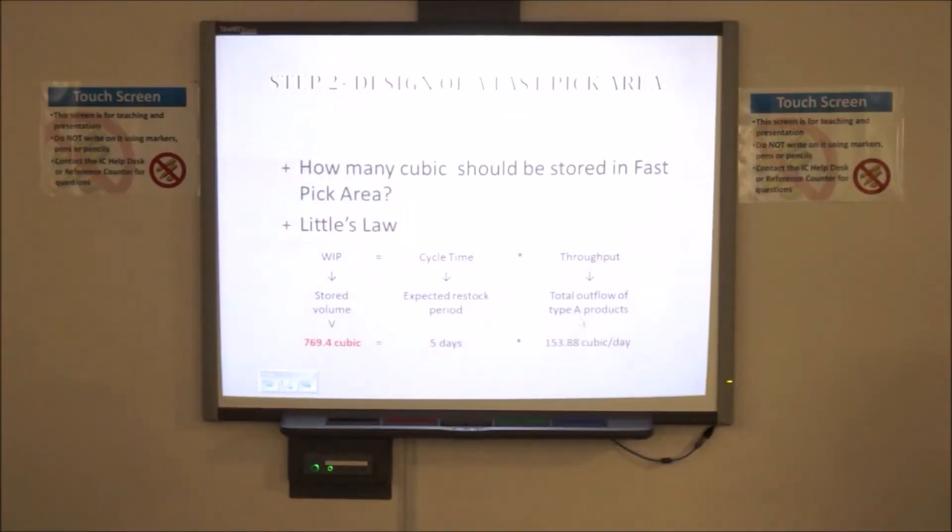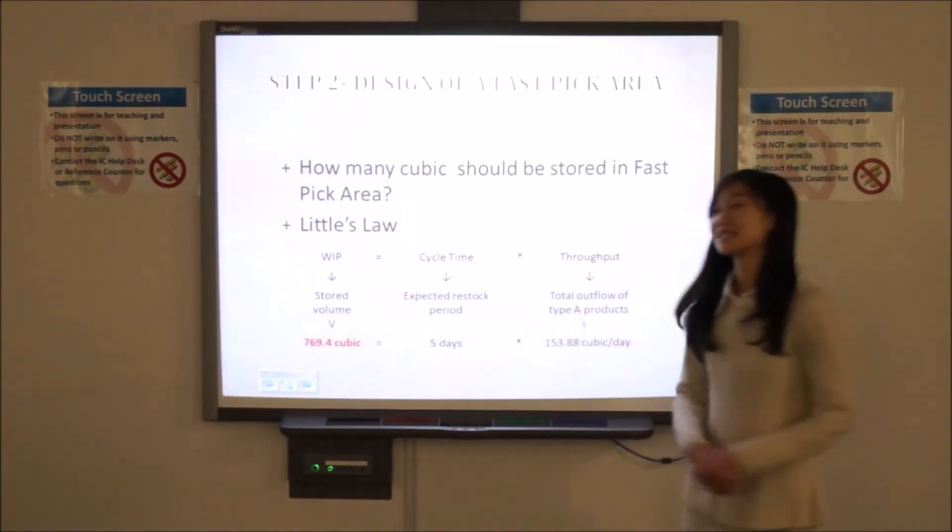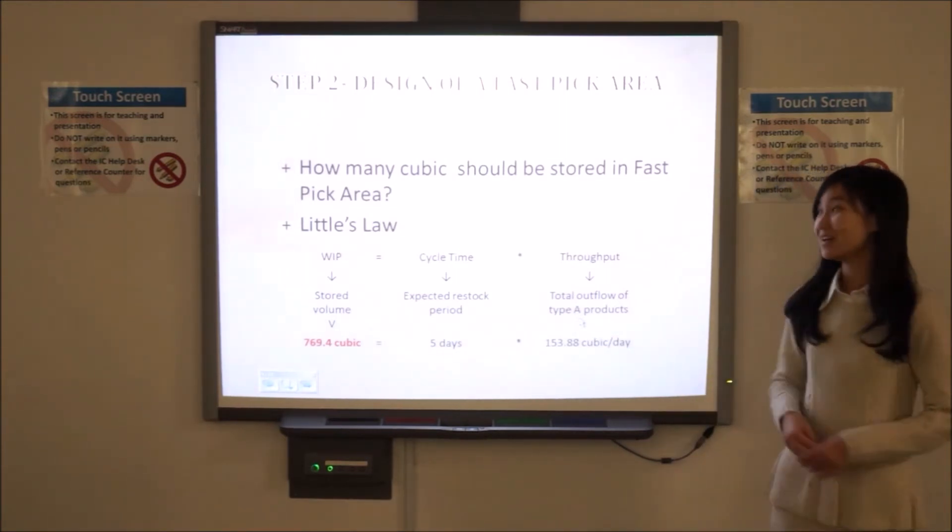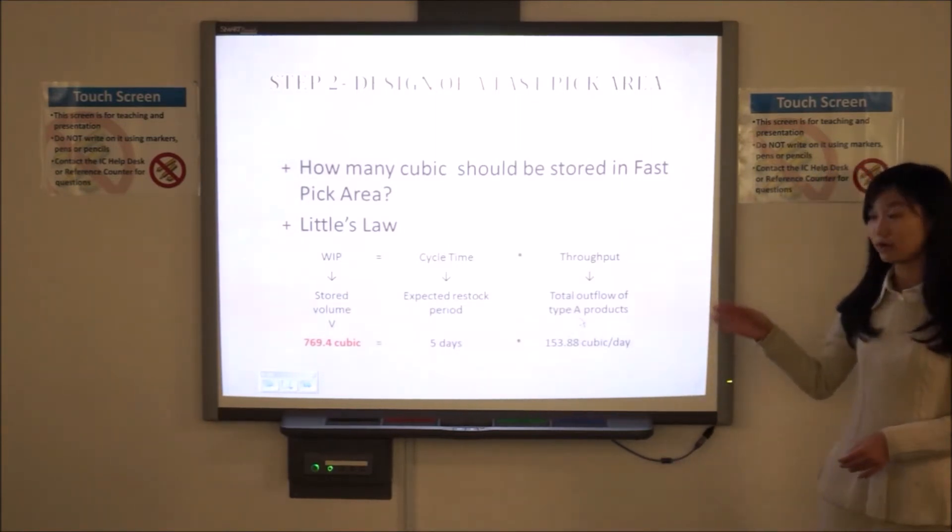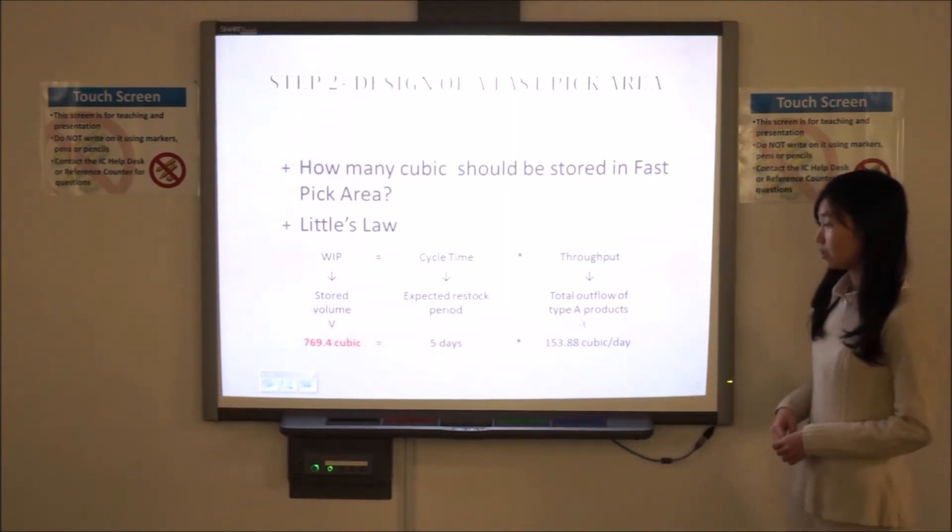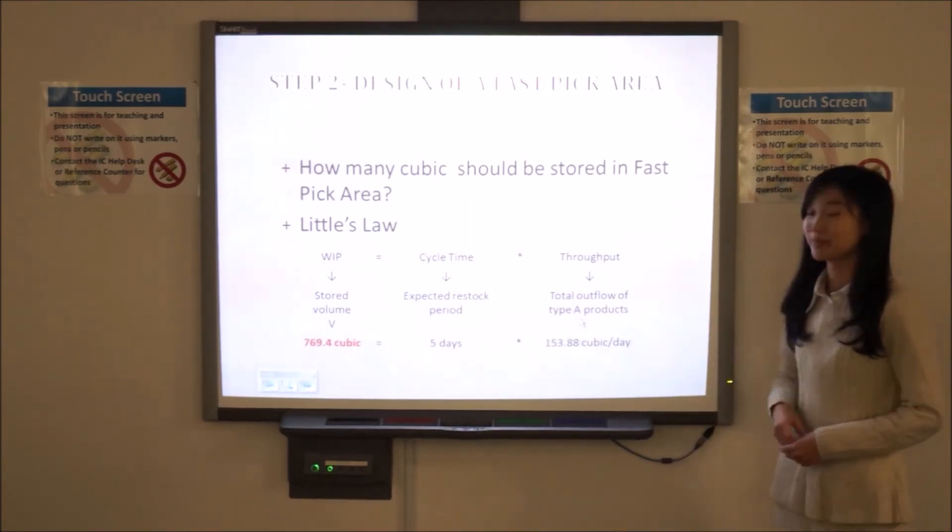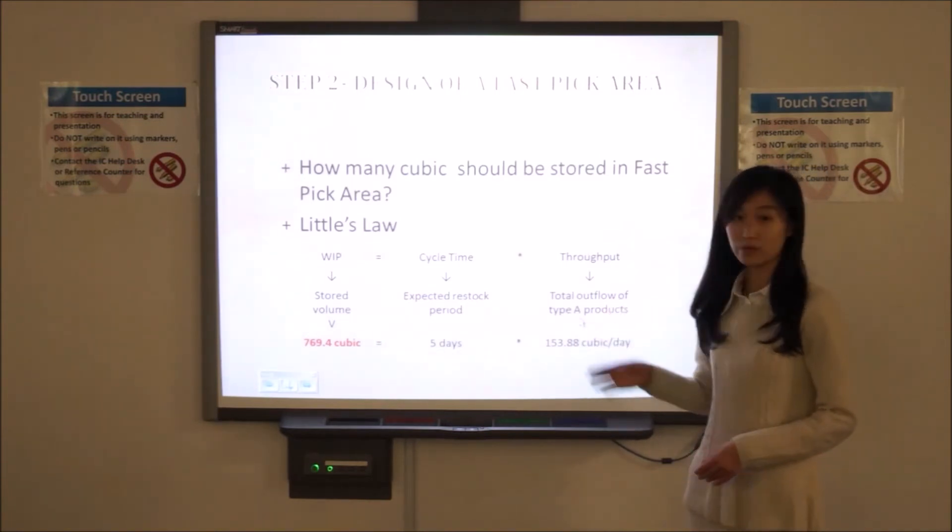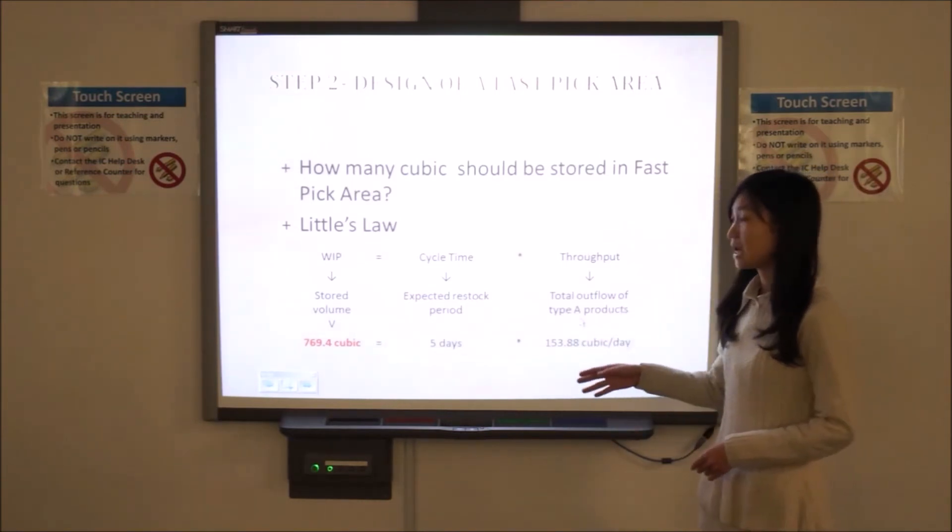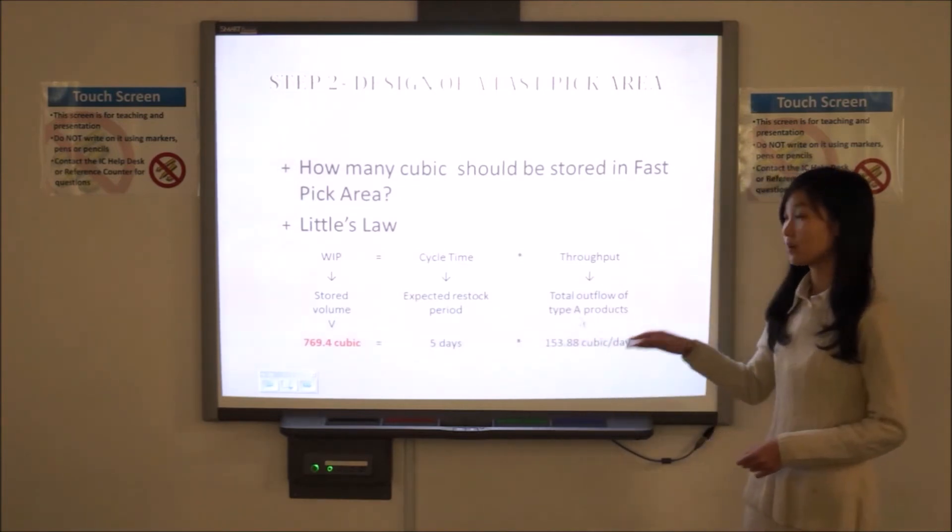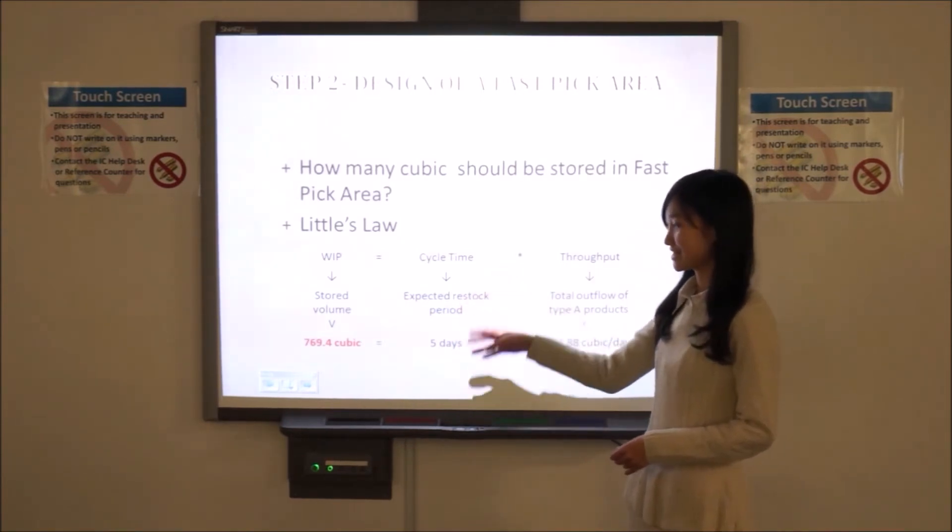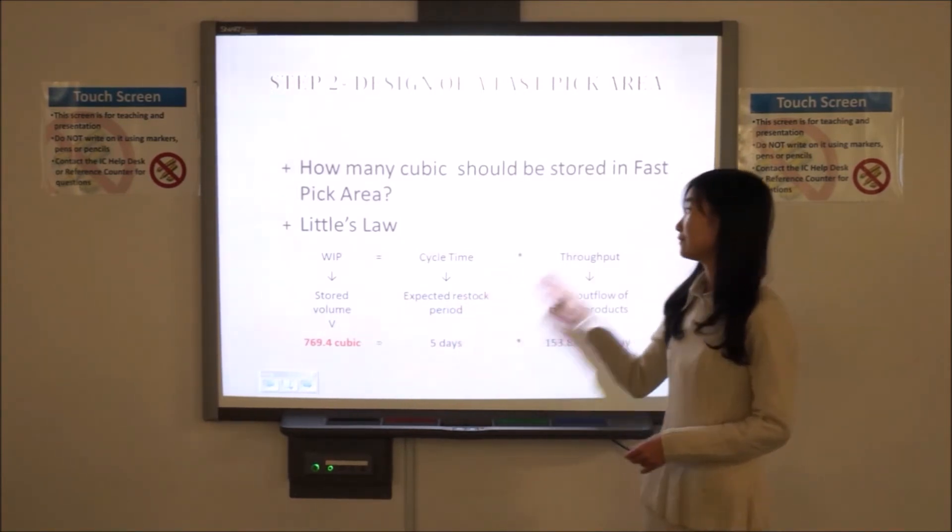Thank you, Matt. Next, we come to the question that how many cubics should be stored in a faster pick area. Here, a little formula is applied to figure out the number. First, is the total output of type A products, which is 153.88 cubics per day. And the cycle time, in other words, the restock period we expect is five days. By multiplying these two numbers, we can come up with the WIP, which is also the stock volume, 769.4 cubics in the fast picking area.